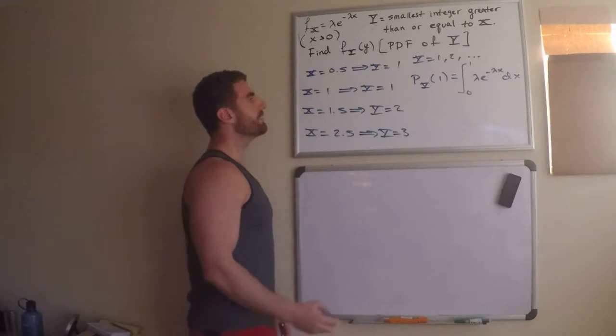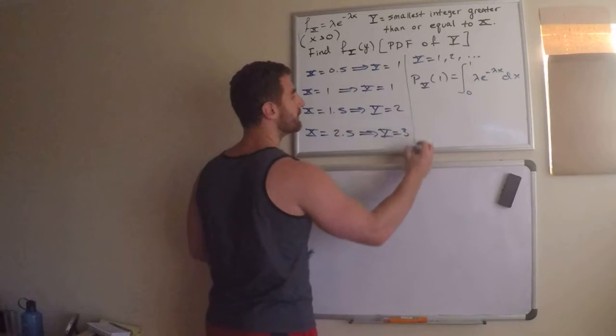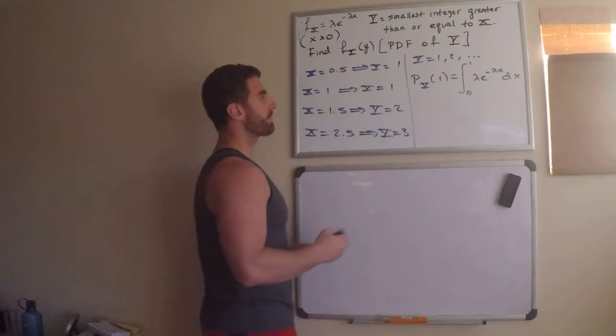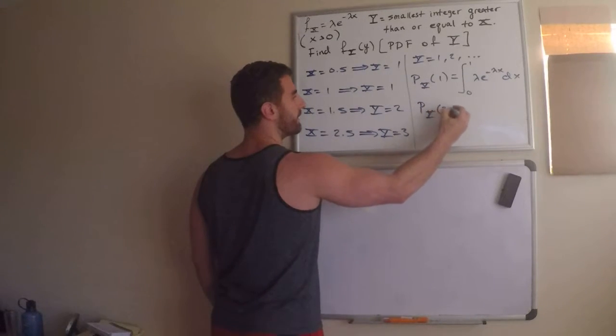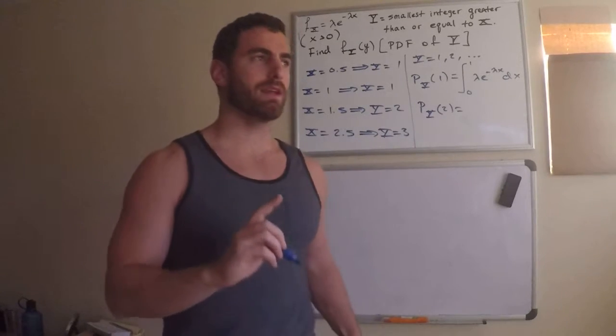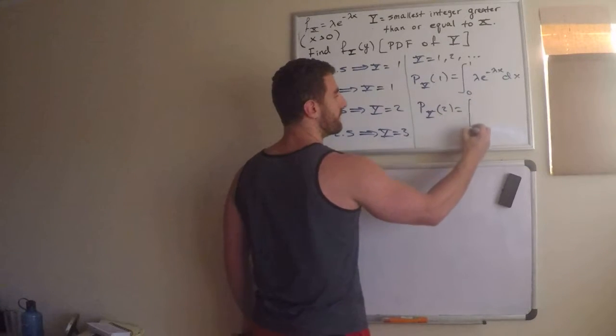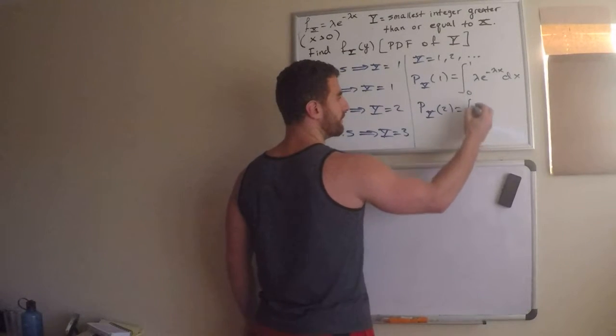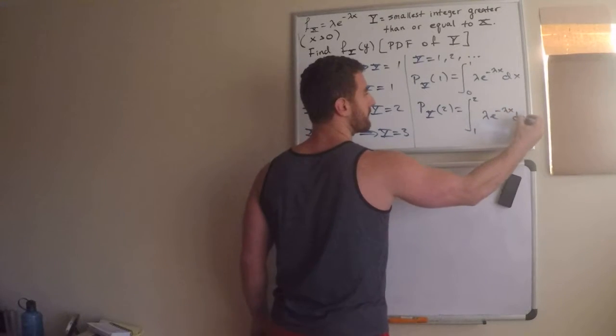What would be the probability that y is 2? Probability that y is 2. So, I'm just figuring out a few probabilities to get my handle of this PDF of y. Well, it's 2 when x is between 1 and 2. So, lambda e to the negative lambda x dx.